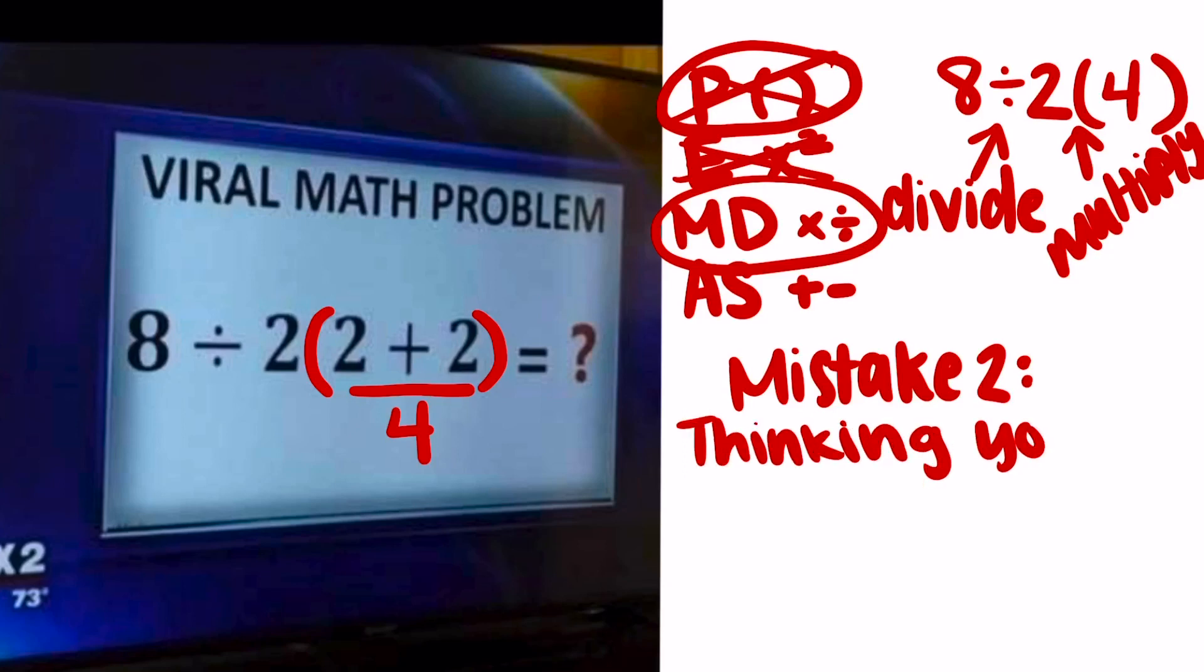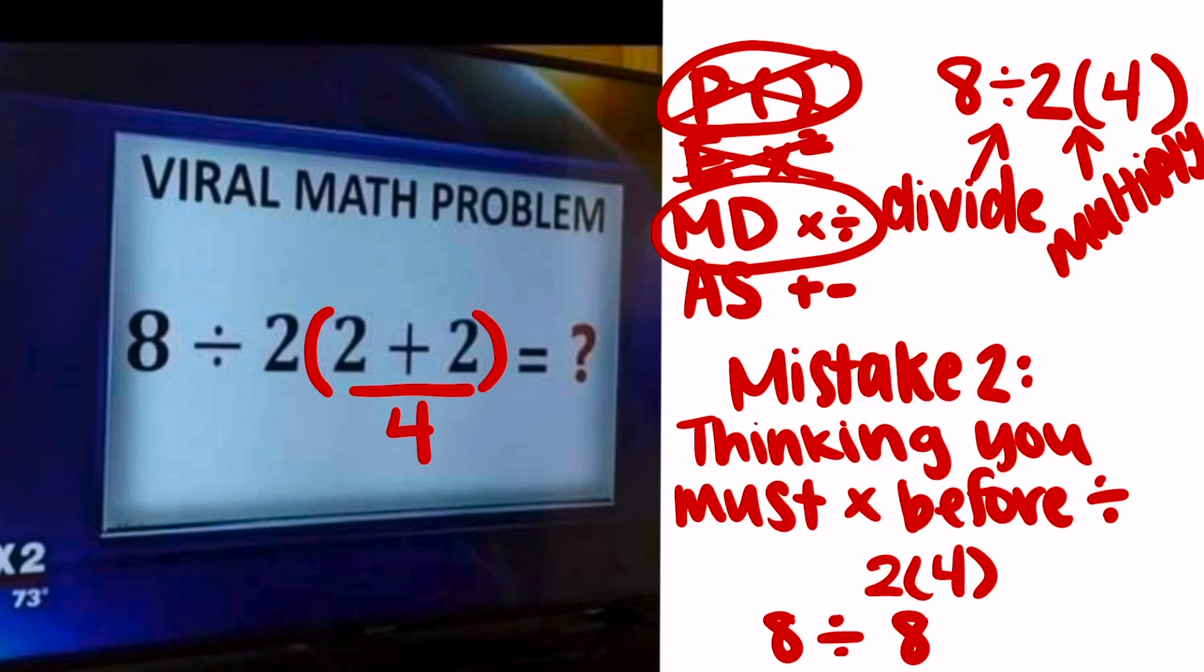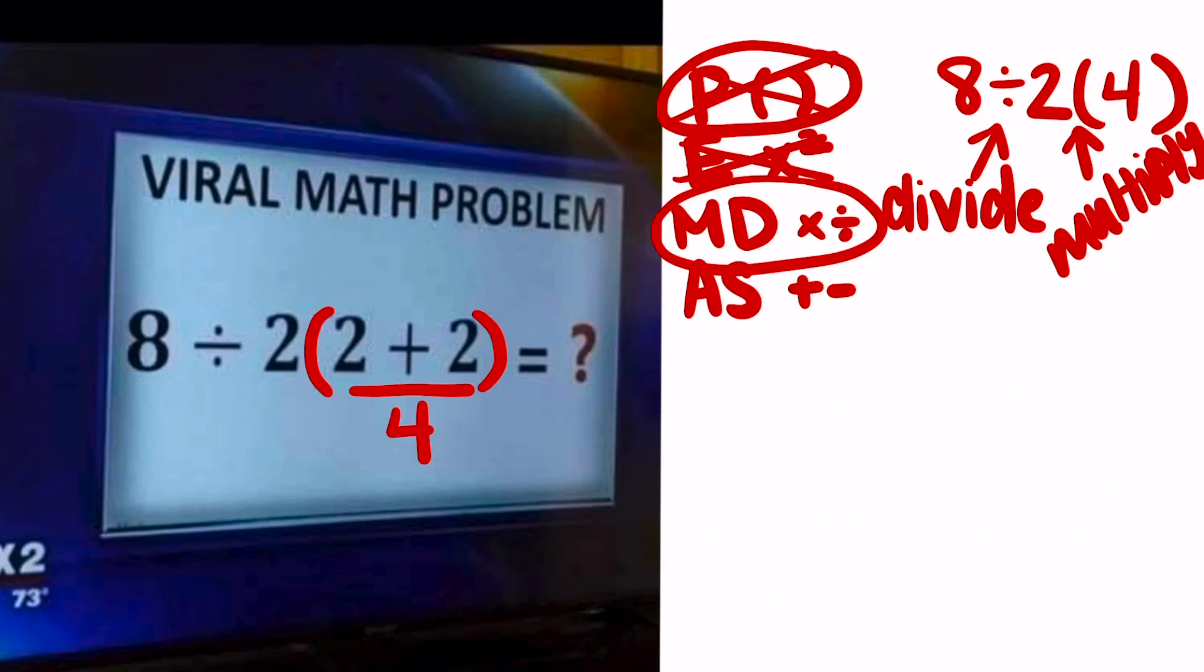If you notice the way I wrote this, multiply and divide go together which means we are going to perform them from left to right just like we read. You can see if you were to multiply 2 times 4 first and get 8 and then do 8 divided by 8 you would get that incorrect answer of 1 again.